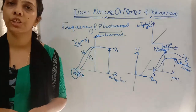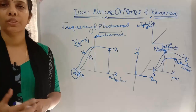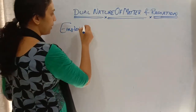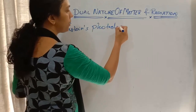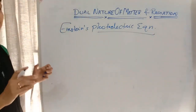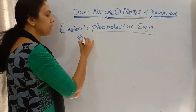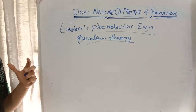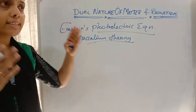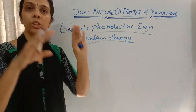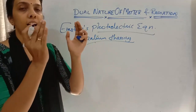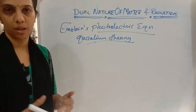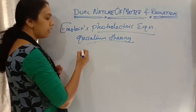Next we study Einstein's photoelectric equation, which is explained on the basis of quantum theory. Here, we consider light as packets of energy, or quanta — not as a continuous radiation falling on the metal surface. When one packet of energy is incident on the surface, the electron comes out.